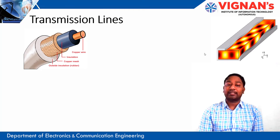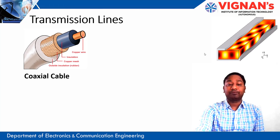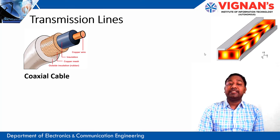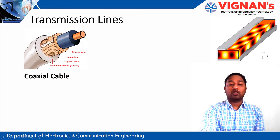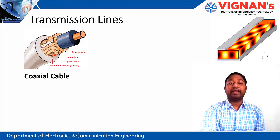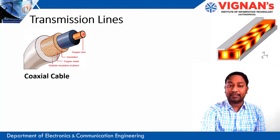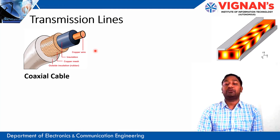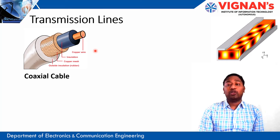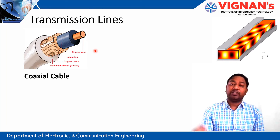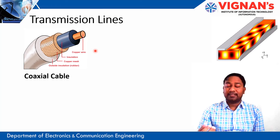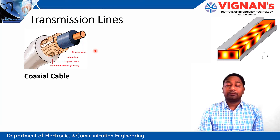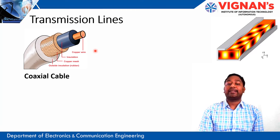One important type is the coaxial cable. It is a two-conductor system where the inner wire is copper, followed by an insulation layer, then another copper mesh, and then outer insulation. Coaxial cables are used in daily life — for TV cables, dish antenna cables, and also for laboratory purposes.